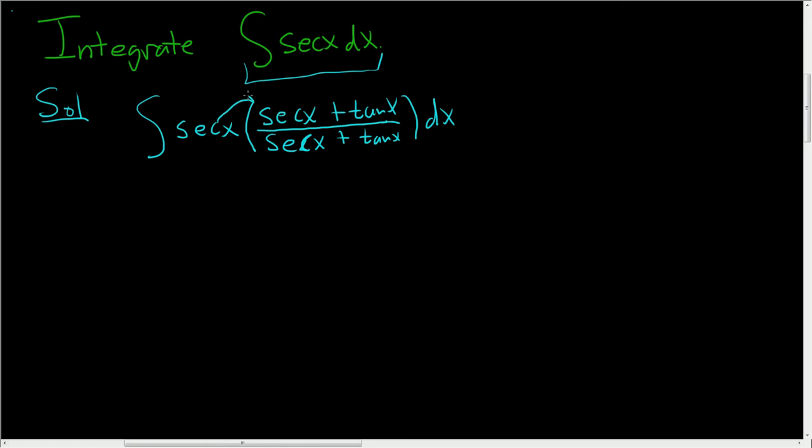Then you distribute the secant x in the numerator. We'll end up with secant times secant, which is secant squared x, and then secant times tangent is secant x tangent x. All of this is divided by secant x plus tangent x.